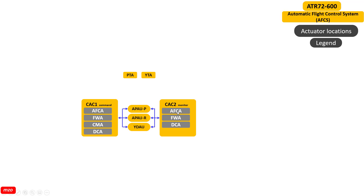CSC1 is the command and CSC2 is the monitor. The pitch trim actuator is controlled by the power trim box, because the command from the CSC has a secondary name — it cannot directly control the power trim actuator. That is why it sends to the power trim box, and the power trim box creates the power signal and controls the pitch trim actuator. Same for the yaw trim actuator.